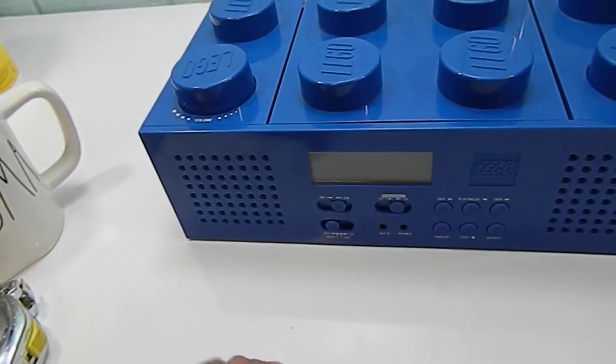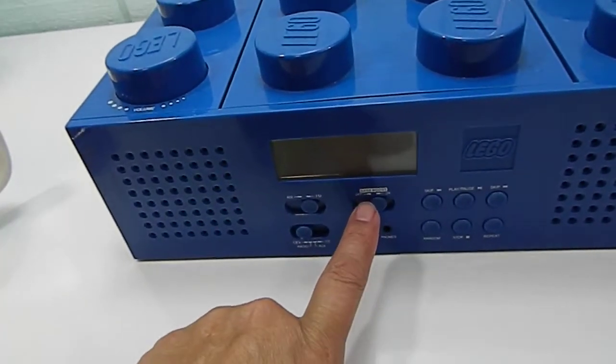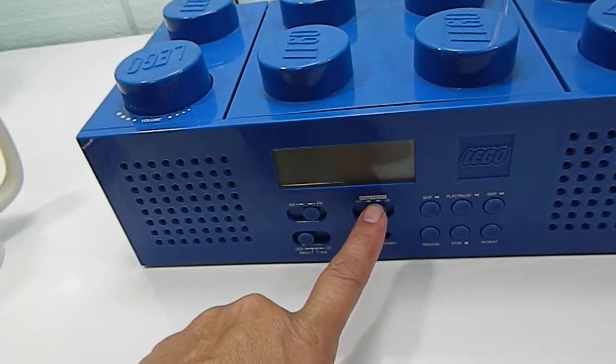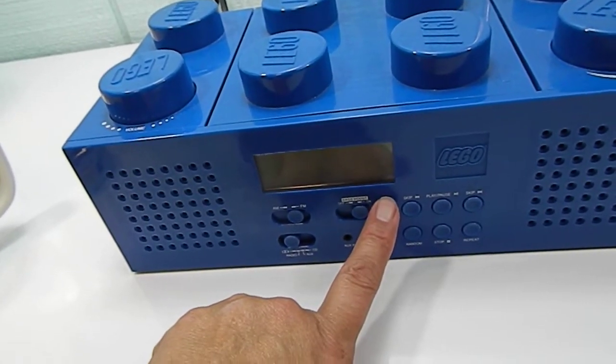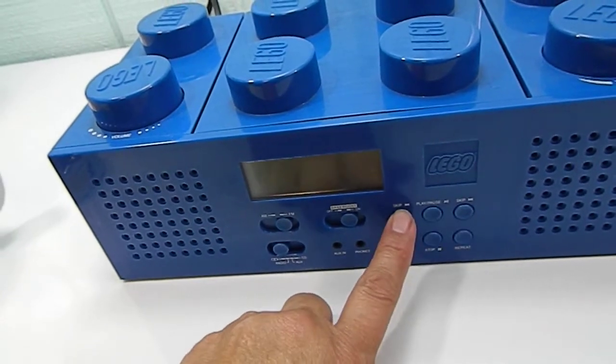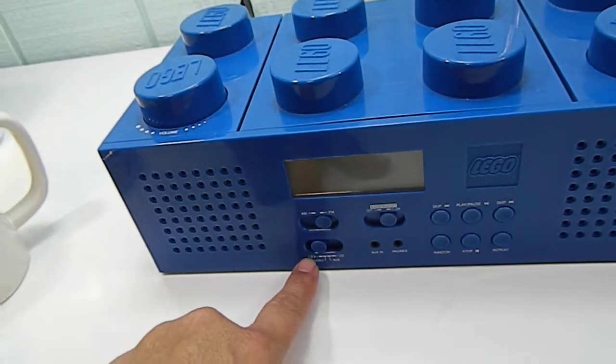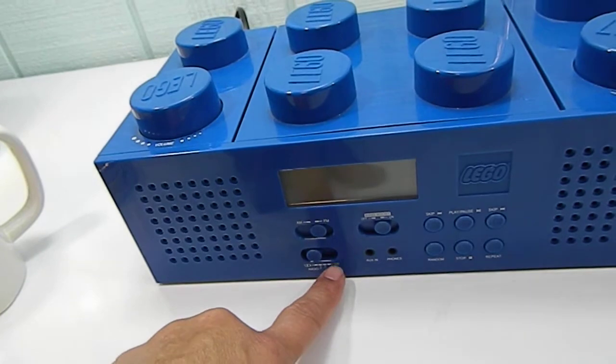That's power off. Okay so it's got bass boost, these are the buttons for the CD player: random, repeat, skip, play, pause, skip. And then this is for radio off, radio, auxiliary and CD.